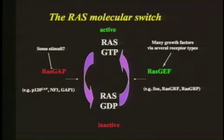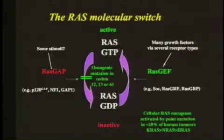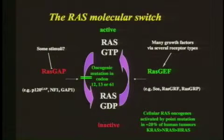RAS, as I'm sure everyone knows, is a molecular switch that has assumed a crucial importance in cancer because of the frequency with which it's mutated. RAS signals between a GTP-bound active state and a GDP-bound inactive state, and this is under the regulation of various inputs, particularly from growth factors acting through guanine-nucleotide exchange factors. And there are RAS GTPase-activating proteins switching the whole thing off. Our continued focus on RAS really is due to the fact that it's the most frequently activated oncogene in human tumors.